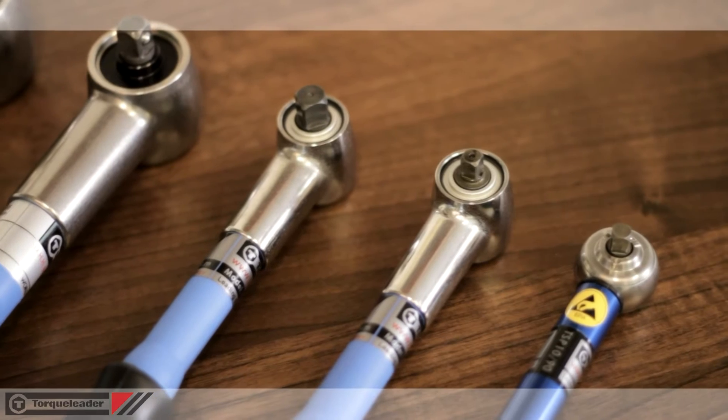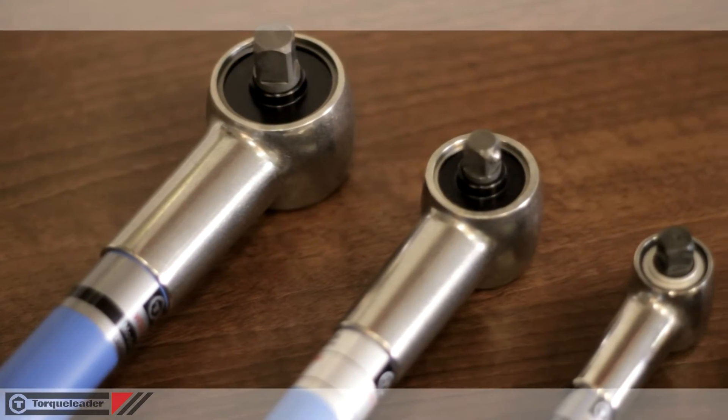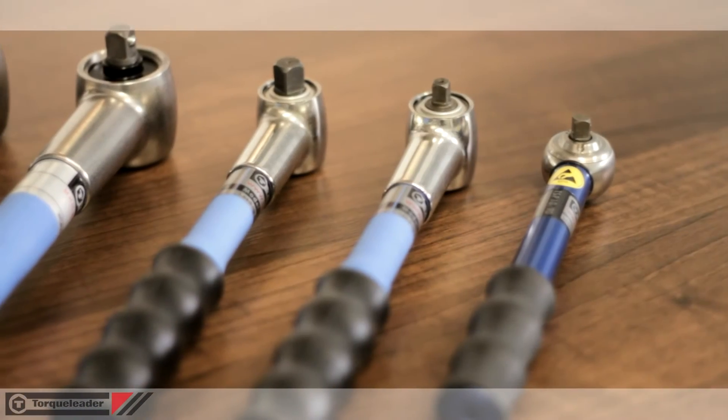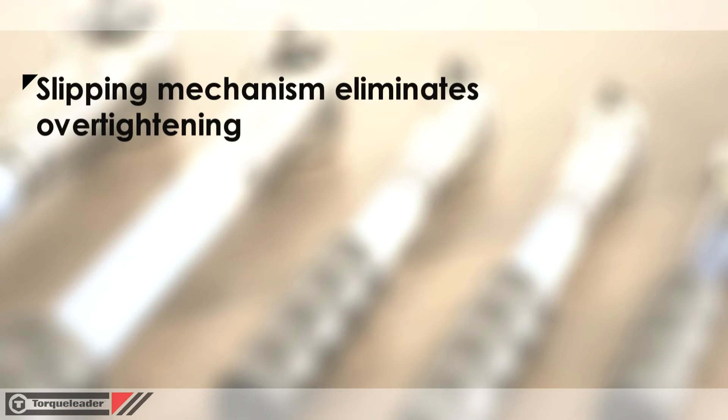In this video we'll look at the TSP and TSN slipping torque wrenches. The TSP and TSN ranges feature a unique slipping mechanism to eliminate overtightening.